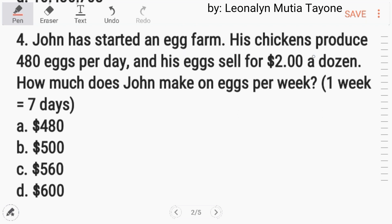Number four, John has started an egg farm. His chickens produce 480 eggs per day, and his eggs sell for $2 a dozen. How much does John make on eggs per week? One week is equals to seven days. First, i-divide muna natin itong 480 divided by 12. Kasi ang one dozen is equals to 12 eggs.